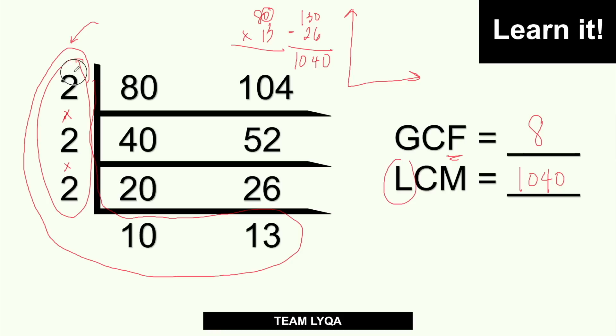Again, GCF, just this side only. Just the vertical one. For LCM, you multiply all of them to get to the answer.